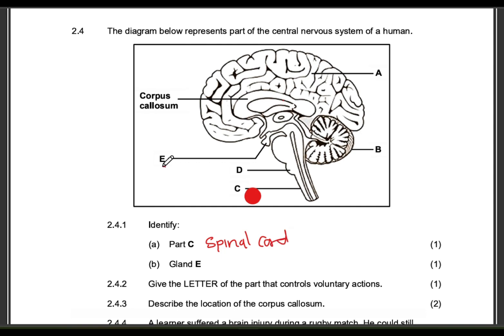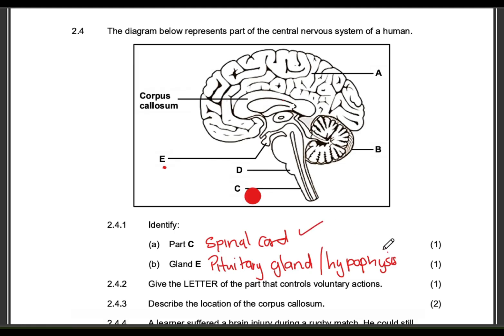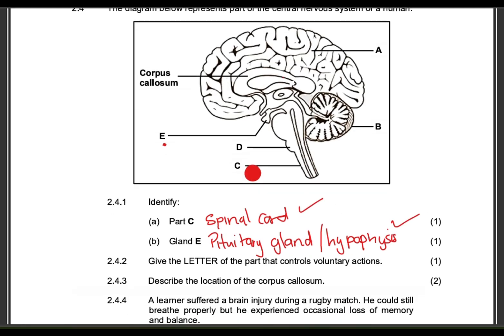Then gland E — that is the pituitary gland, or you can say hypophysis — one mark each. Then give the letter of the part that controls voluntary actions. Remember you have involuntary and voluntary. Voluntary actions are controlled by part A, letter A.